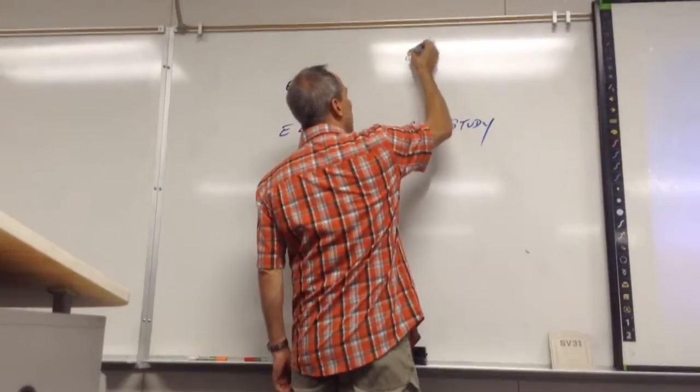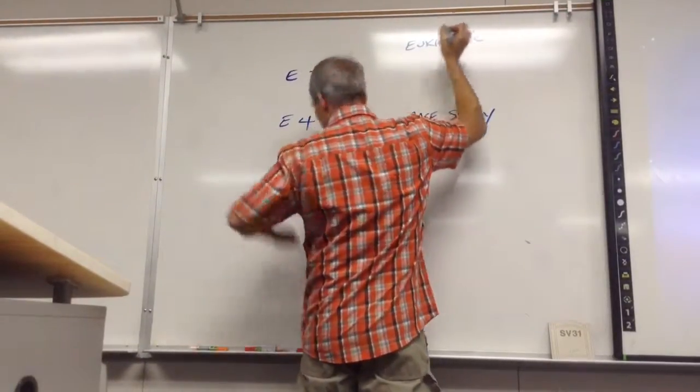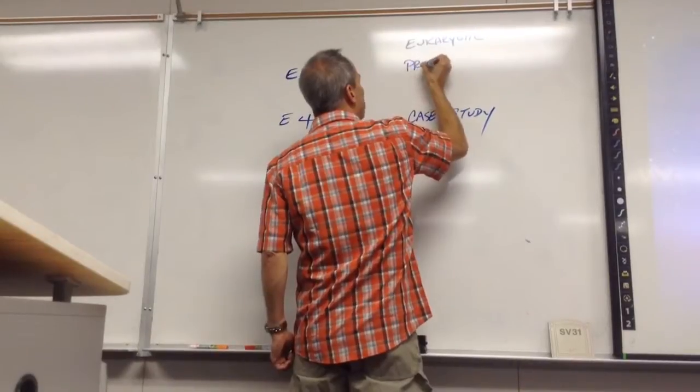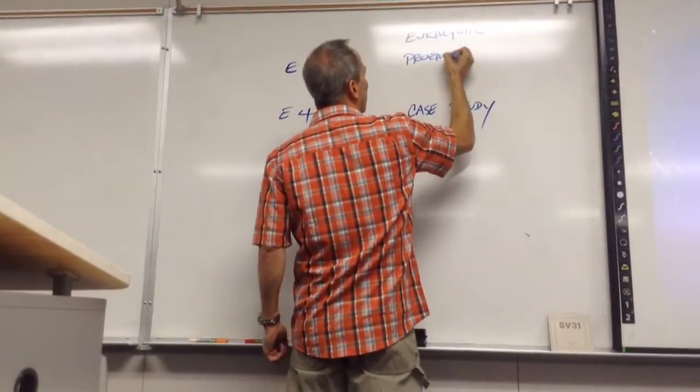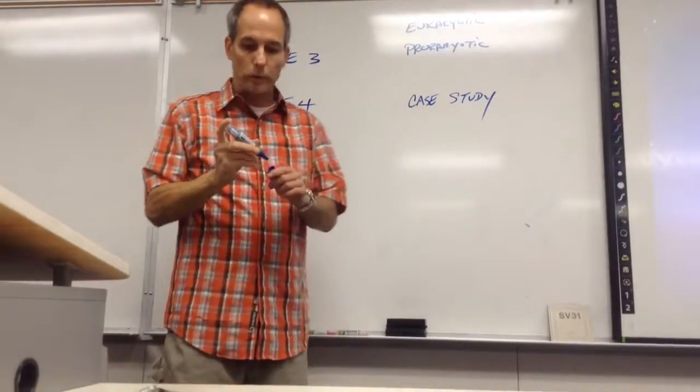So you're going to have what's called a eukaryotic case study and a prokaryotic case study. I know it looks like it's spelled wrong. Each one is worth 10 points.